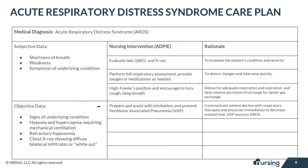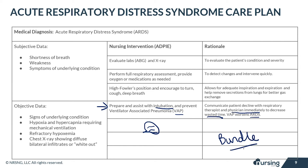Prepare your patient and assist with intubation, and once intubated, work to prevent ventilator-associated pneumonia. It is very important to communicate patient decline with the respiratory therapist and the physician immediately to decrease wasted time. Once the patient is on the ventilator, do everything you can to avoid VAP, because it worsens ARDS. Most facilities have a VAP bundle to help prevent this from happening.